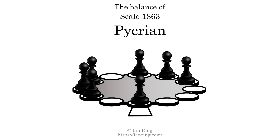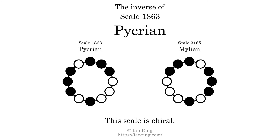The inverse of a scale is a mirror image — it is what you get when the sequence of intervals is reversed. The inverse of this scale is scale 3165, also known as Marlion. This scale is chiral: it cannot transform into its inverse by rotational transformation. This scale has no rotational symmetry.